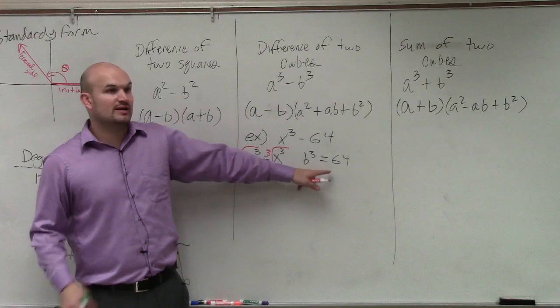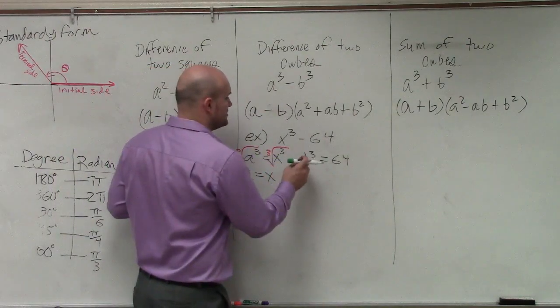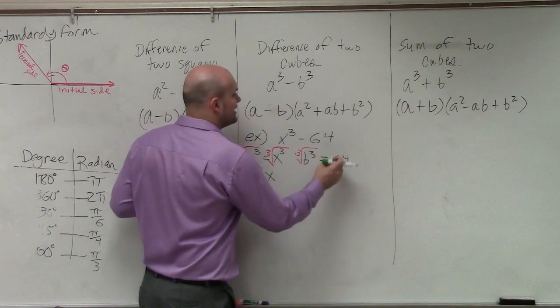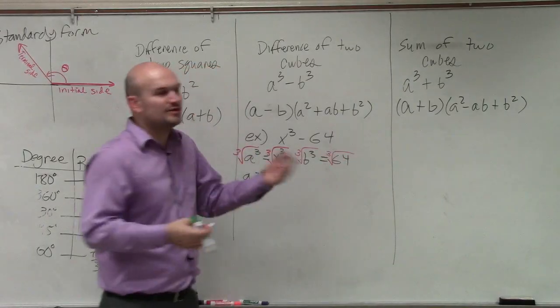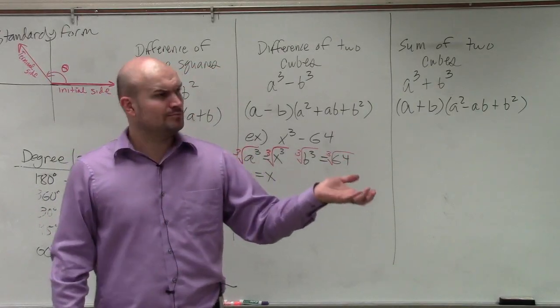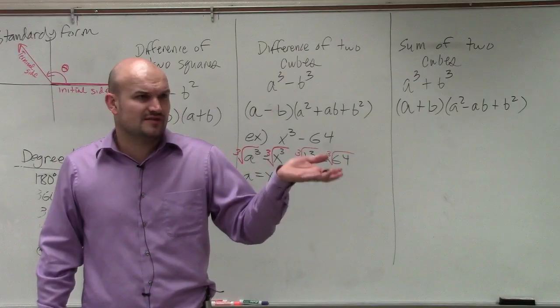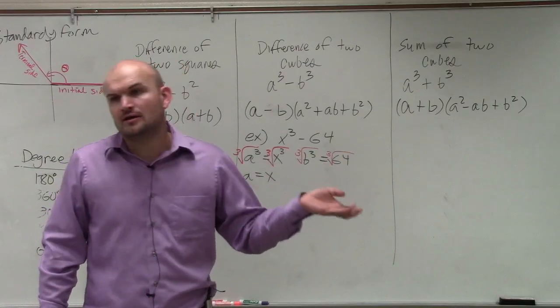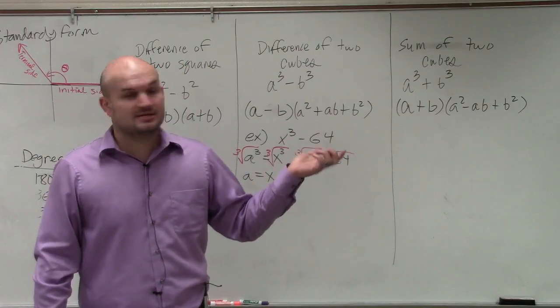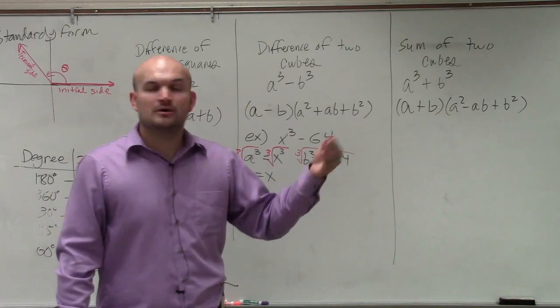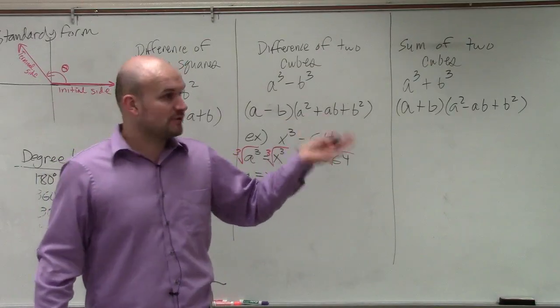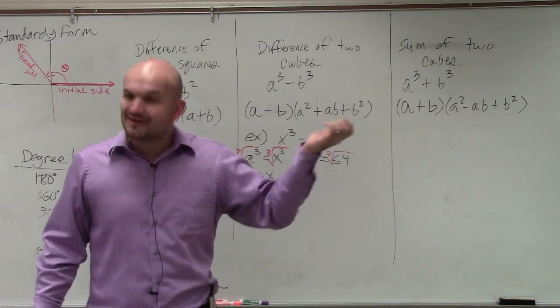Then you say, what number multiplied by itself three times gives you 64? And if you're having trouble with this, just work your way up the ladder. Let's try 2. 2 times 2 times 2, does that give you 64? No, it gives you 8, right? Then do 3 times 3 times 3. Does that give you 64? No, it gives you 27. OK, let's do 4. 4 times 4 times 4, does that give you 64? Yes.